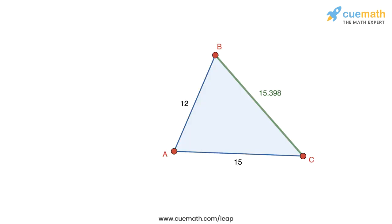Here's the simulation which shows a triangle ABC in which AB has a length of 12 centimeters and AC has a length of 15 centimeters. These two lengths are fixed.